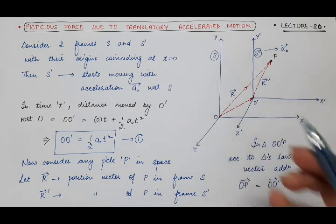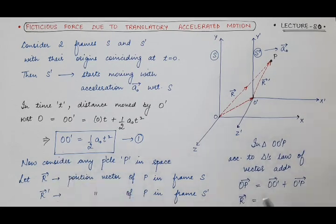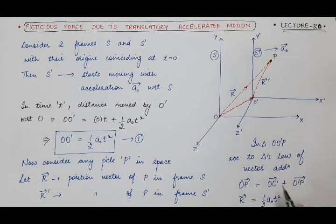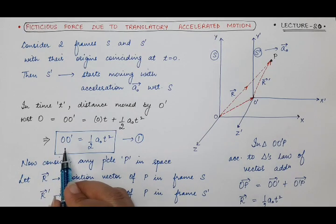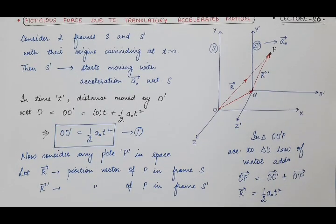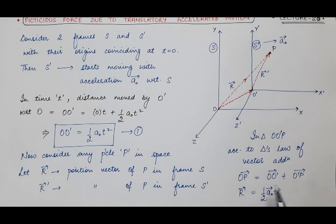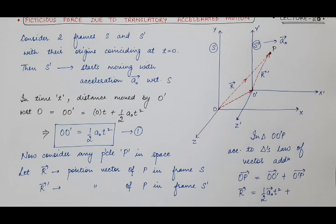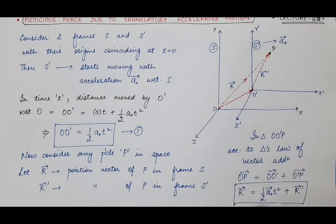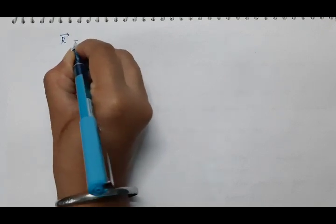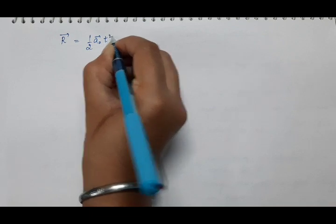Now we have a triangle O O' P, so we can apply the triangle's law of vector addition. According to the triangle's law of vector addition, the resultant vector is R vector. The value of OO' in vector form is ½A0 vector × t², since acceleration A0 is a vector quantity. So OO' vector equals ½A0 vector × t², and O'P vector is R' vector.